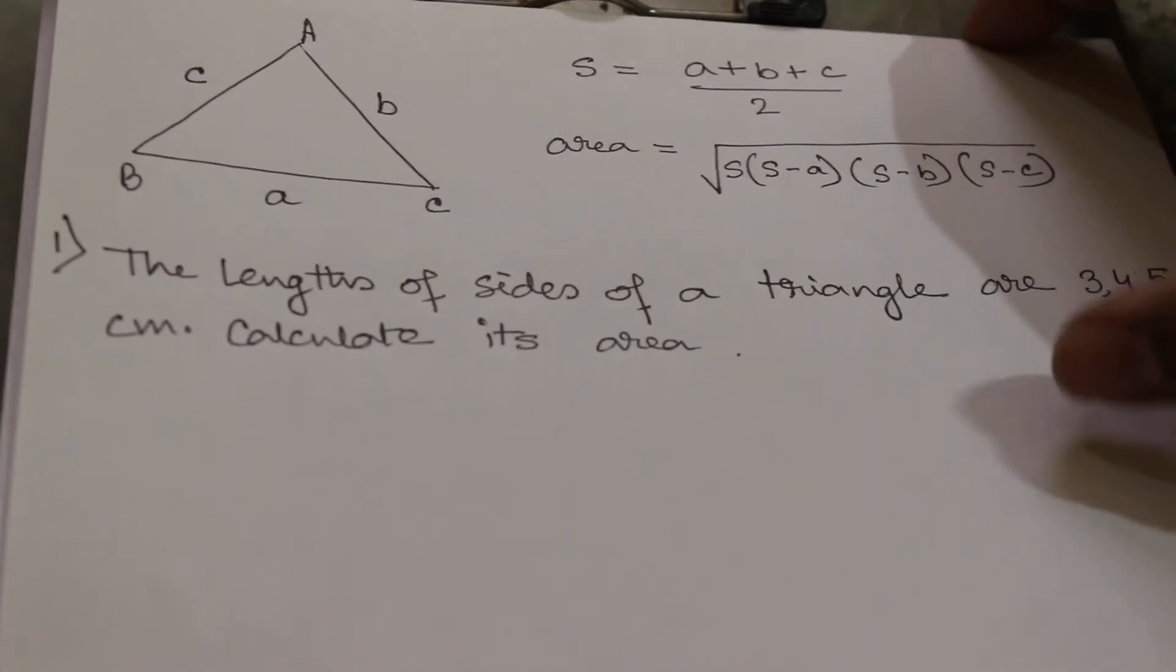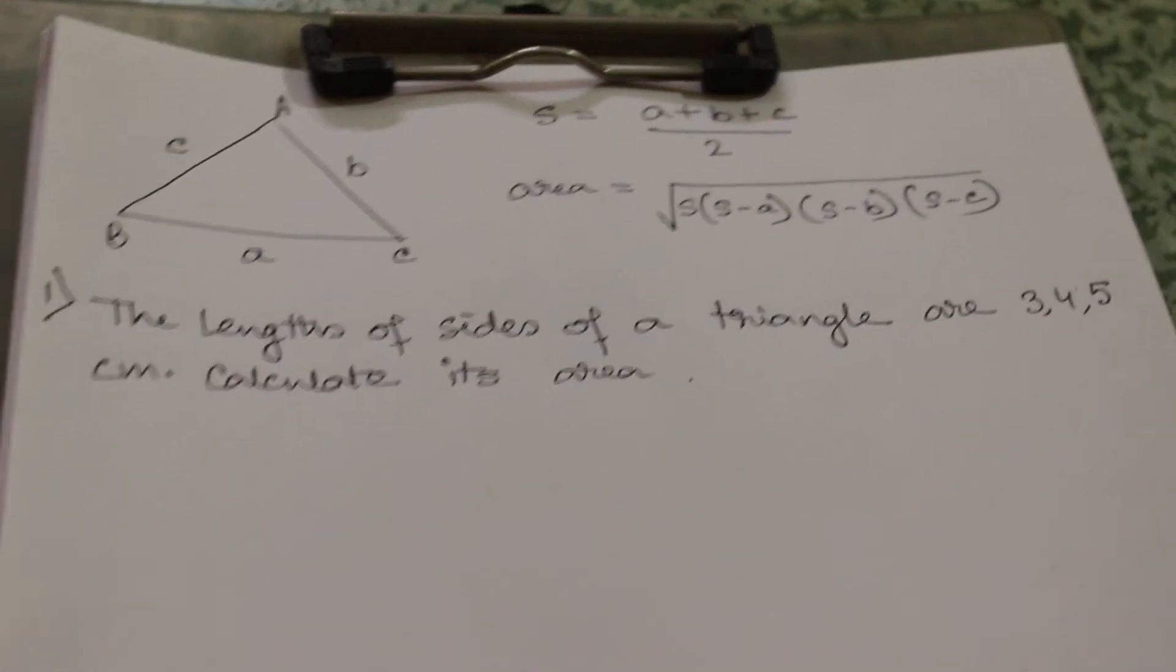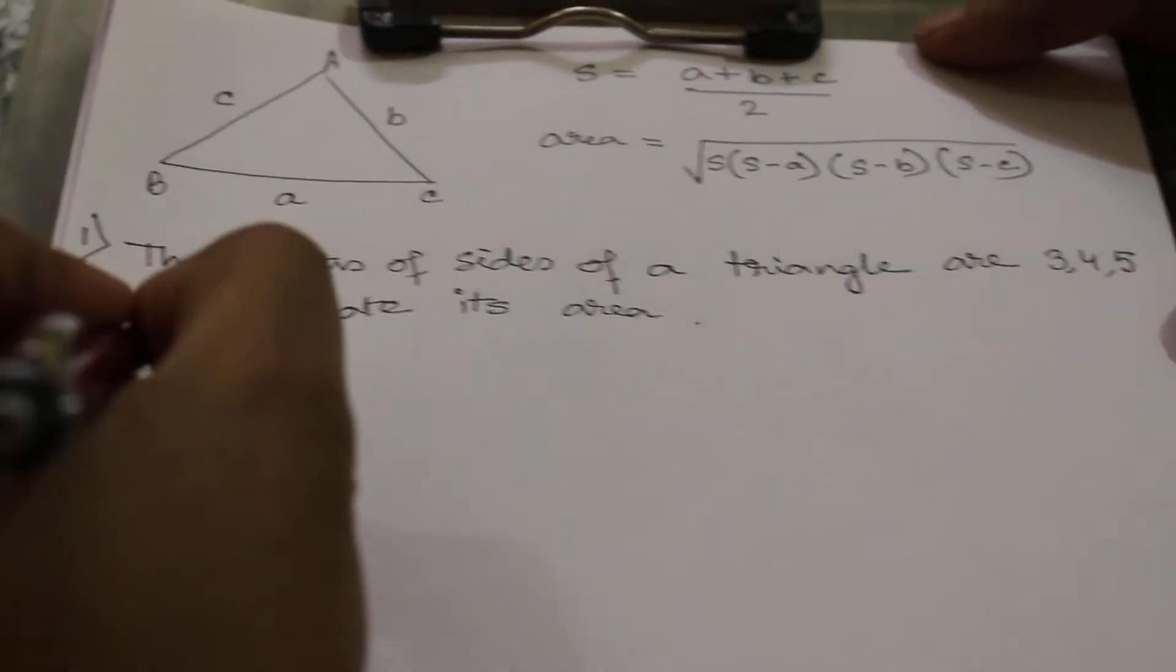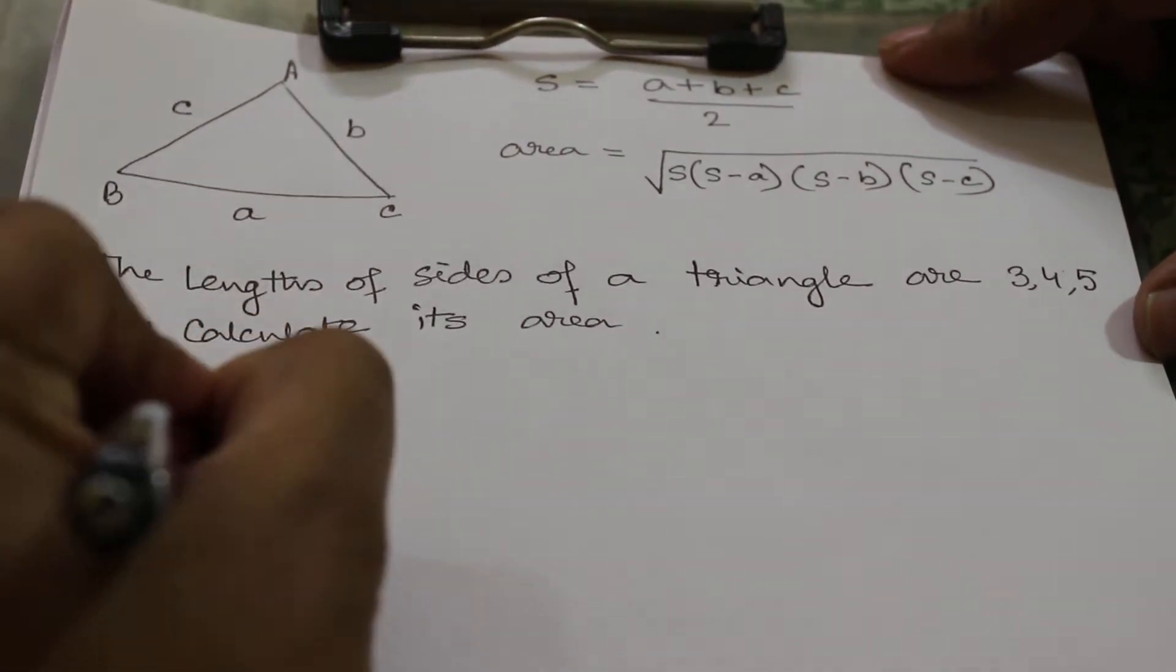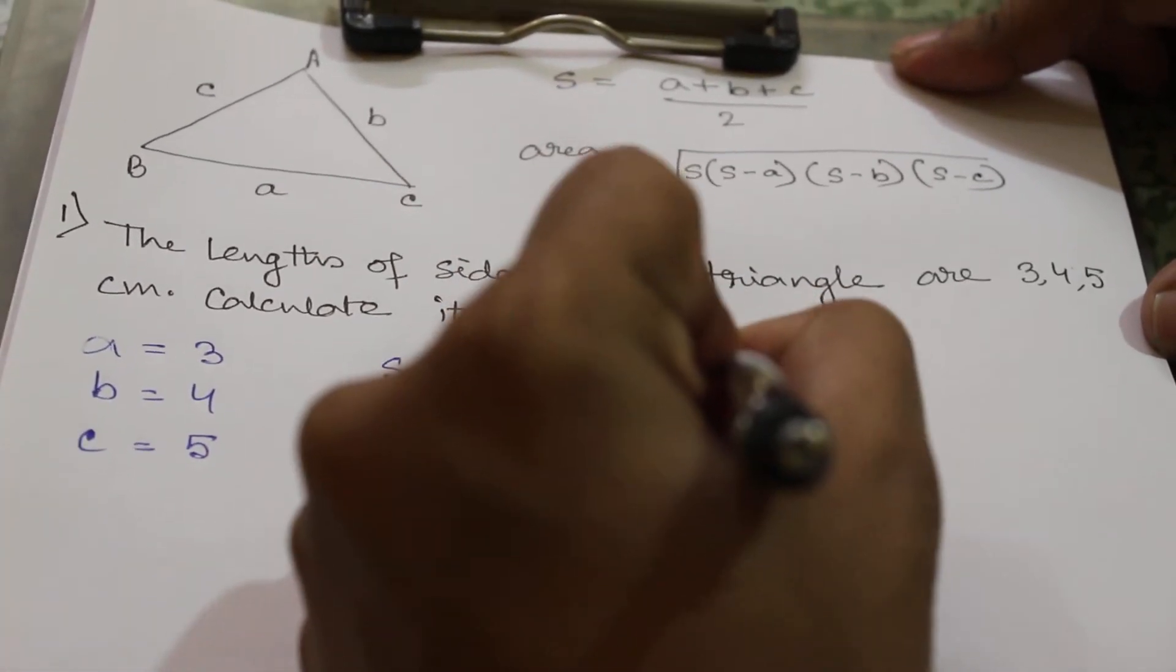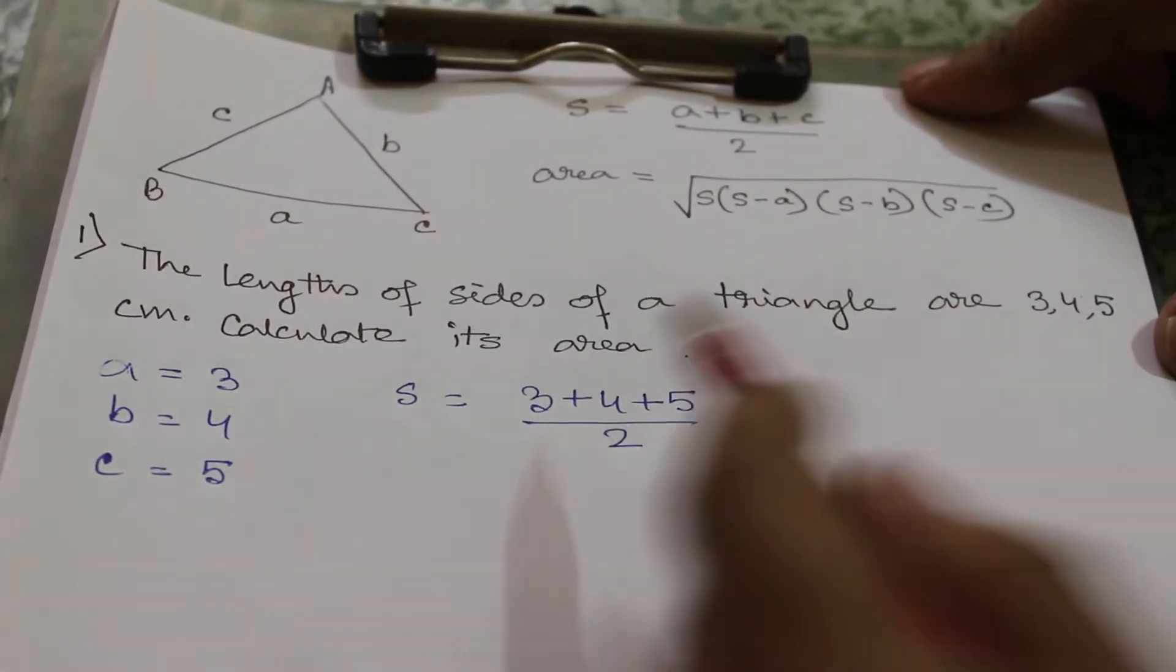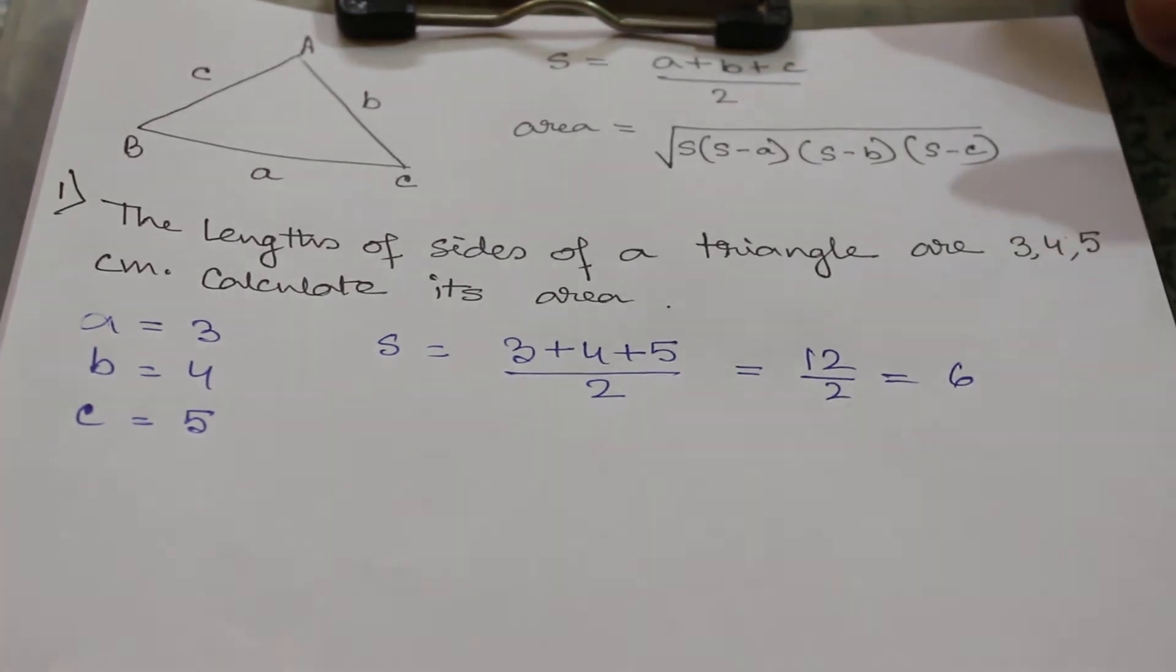Let's start with some examples. This is our first example: The length of sides of a triangle are 3, 4, 5 centimeters. Calculate its area. So a is 3, b is 4, and c is 5. First we will calculate s, the half perimeter, which is the sum of three sides divided by 2. The sum is 12 divided by 2, that is 6.